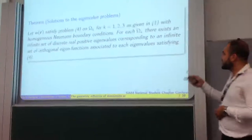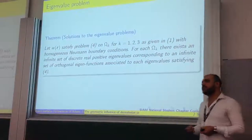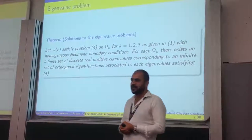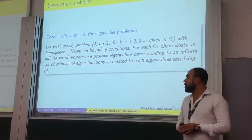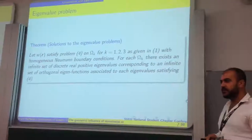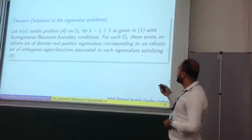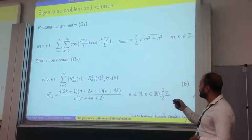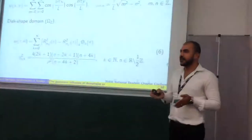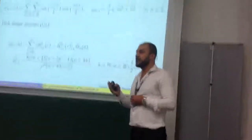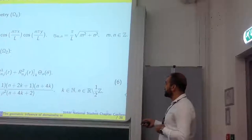This theorem basically contains the closed-form solutions. We should note that the spectrum of the Laplacian is crucially dependent on the boundary conditions and the geometrical properties of the domain. So, if W_R satisfies the eigenvalue problem stated previously, then for domains 1, 2, and 3 with homogeneous normal boundary conditions, W has this form. The first case gives the trivial solution — the eigenvalue problem has a discrete infinite set of infinitely many positive eigenvalues. For the disk shape, it has this form, with these two being Bessel series of the first kind.